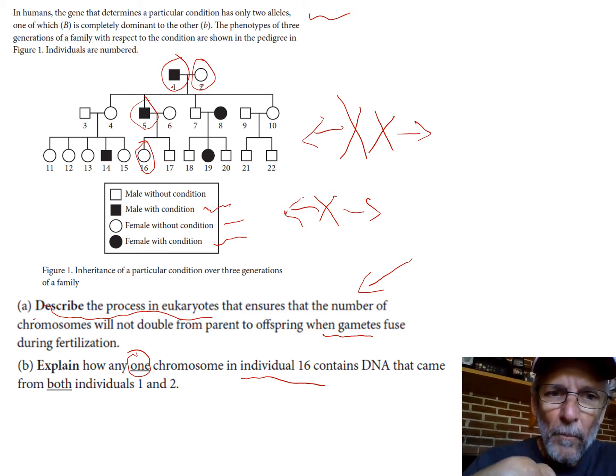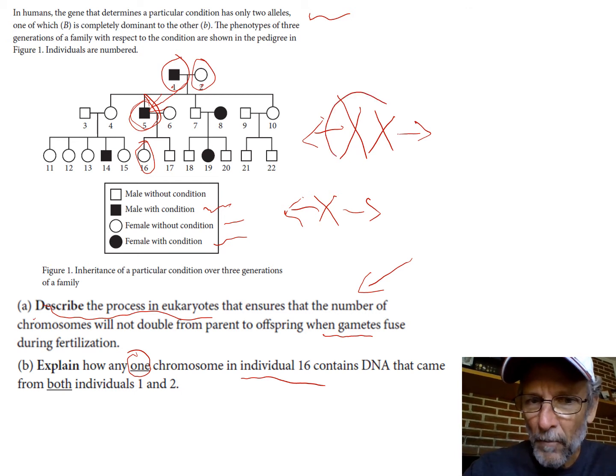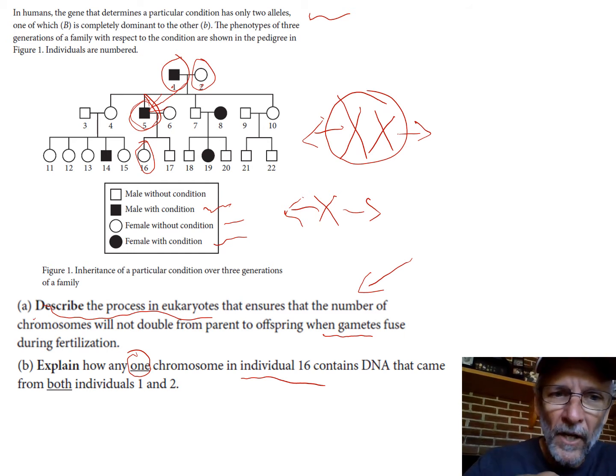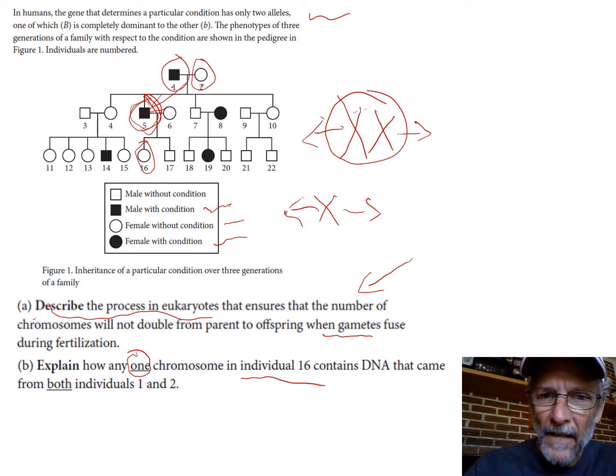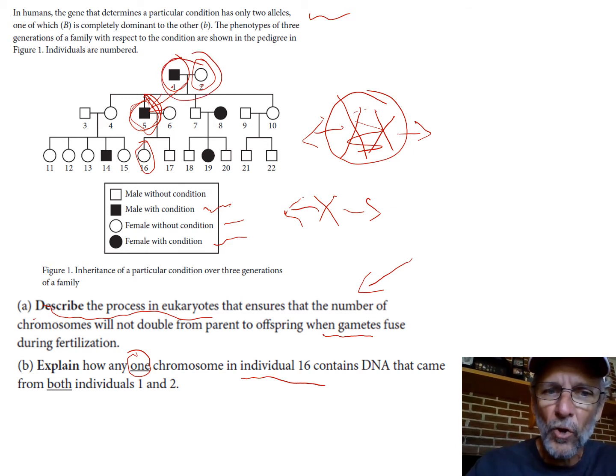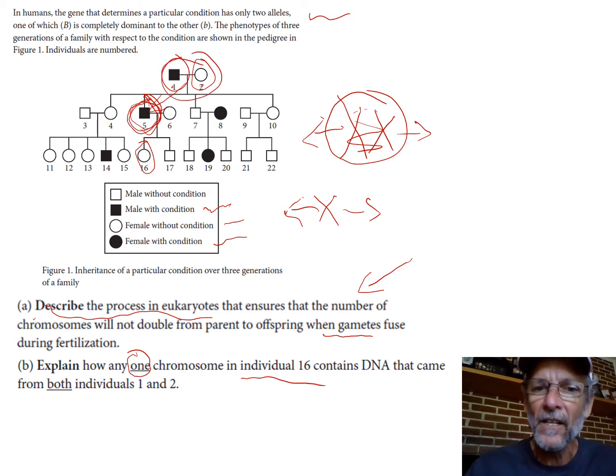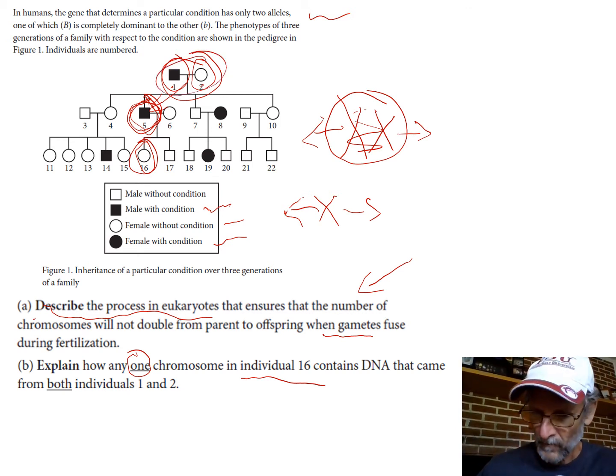What they're asking you is do you know about crossing over? Because dad got chromosomes from grandpa and grandma here, but in the process of getting them he then mixed up grandma and grandpa's chromosomes in that thing called crossing over which happens in meiosis one. In person number five's gamete formation process, crossing over happens, so he then had a mixture of individuals one and two chromosomes on every chromosome. That's why his daughter number sixteen got a mixture of her grandparents' chromosomes.